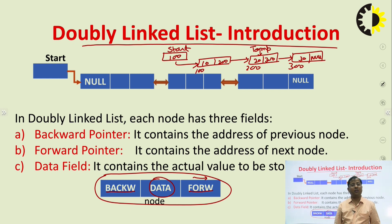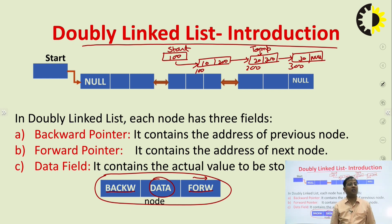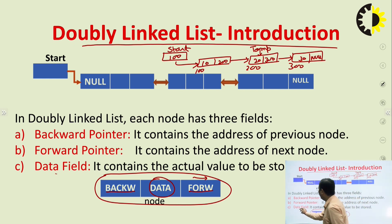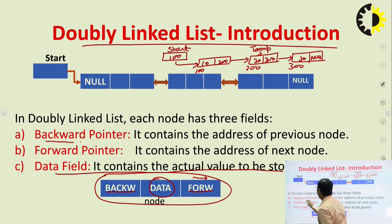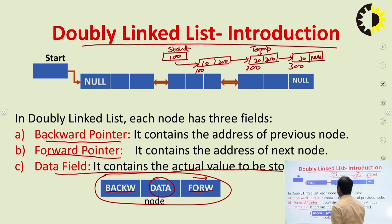So, doubly linked list is a collection of nodes where each node has at least three parts: one data field and two address fields. The first is the backward pointer and the other is the forward pointer.